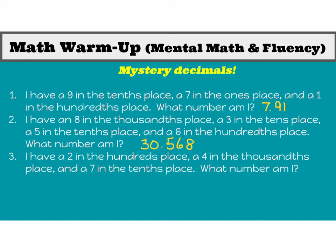Let's see if you got this one correct: thirty and five hundred sixty-eight thousandths. What you might have figured out is that if I don't give you a value for a certain place, you'll have to fill that in with a zero. Notice this one said a three in the tens place but didn't say anything about the ones place, so I put my three in the tens and had to put a zero there. Then a five in the tenths, a six in the hundredths, and an eight in the thousandths place.